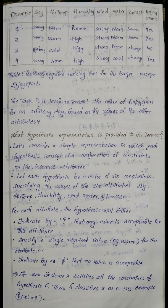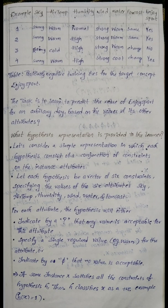For each attribute, the hypothesis will be indicated by a question mark — meaning any value is acceptable — for example, sky can be sun or rain. A specific required value such as warm indicates air temperature is warm. Pi (∅) indicates no value is acceptable. If some instance x satisfies all the constraints of hypothesis h, then h classifies x as a positive example.